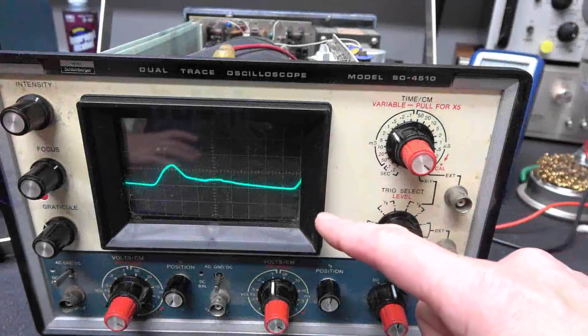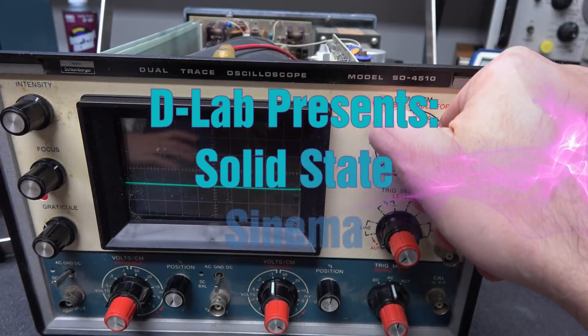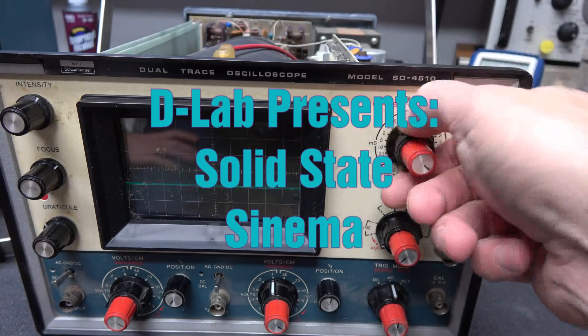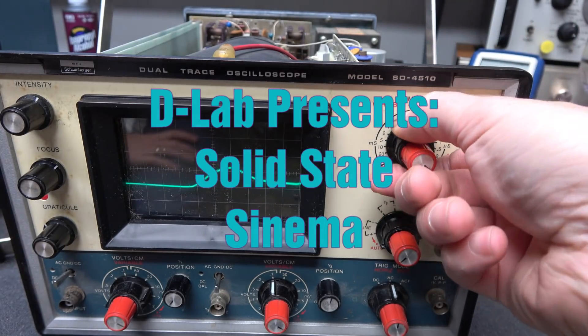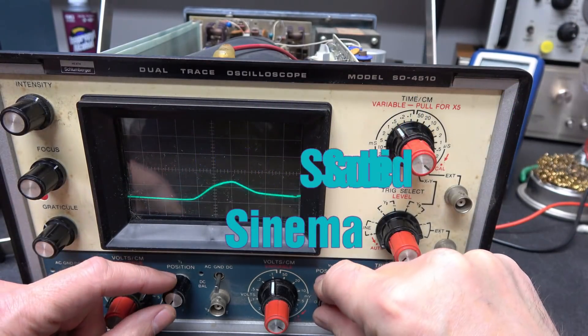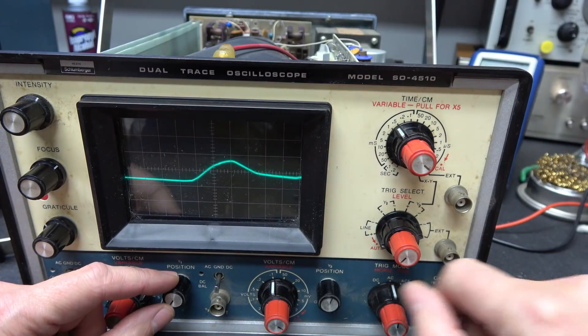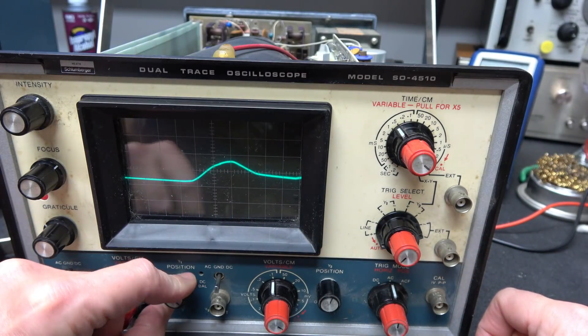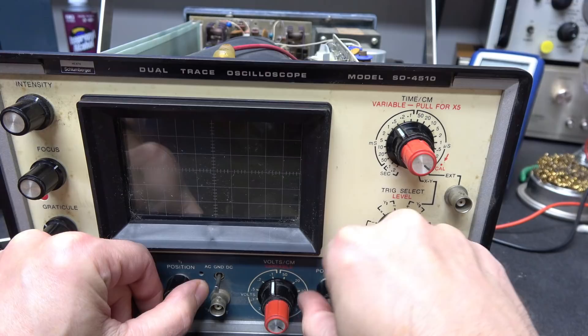As you can see, that trace is pretty distorted but it does respond now to the time base, and my position on Y2 works, but I still have nothing in channel 1.